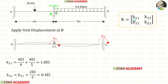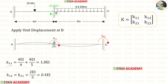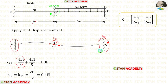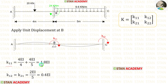In the stiffness matrix let us find the first row by applying unit displacement at the first coordinate, which is at point B. To find K11, from point B we look at the other ends. At point A there is a fixed support, so we apply 4EI/L with L = 4. At point C there is also a fixed support, so we apply 4EI/L with L = 5. Finally, K11 equals 1.8EI.